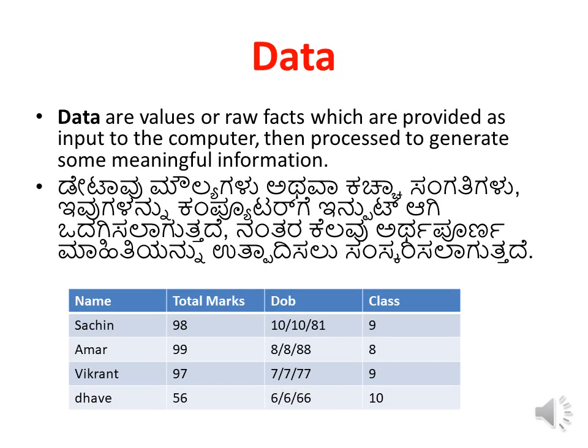Data are values of raw facts which are provided as input to the computer. For example, in the marks card scenario, all the marks and other details about every individual person have to be given — that is called data. Data is any raw fact which is given and read by the particular hardware and software.